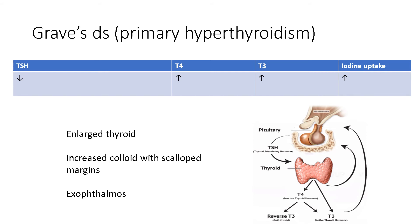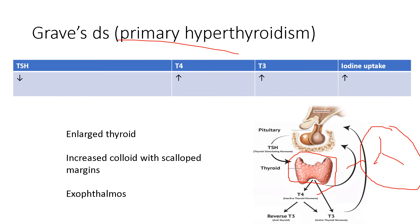Now, Graves' disease — this is primary hyperthyroidism, meaning the problem lies in the thyroid. Graves' disease is autoimmune: autoantibodies act exactly the same way as TSH. So it's as if you have a lot of TSH, but it's really TSH mimics — antibodies stimulating the thyroid in lieu of TSH. Therefore, you get a lot of T4; the thyroid takes up a lot of iodine, making T4 from it. In turn, T4 is converted into T3 and reverse T3. This antibody effectively acts as TSH.